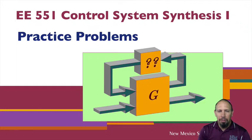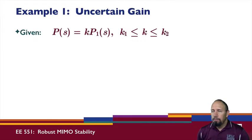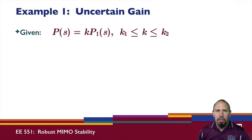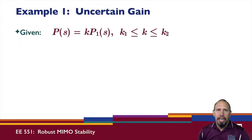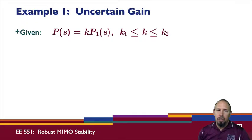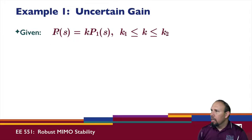We're now going to look at some practice problems. The first thing we're going to look at is how do we take a given problem and put it into a standard form — like a multiplicative uncertainty or an additive uncertainty. Here's an example.